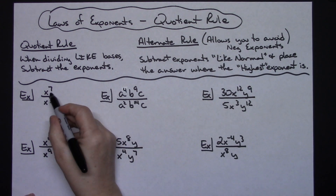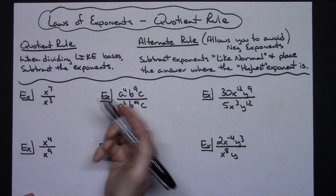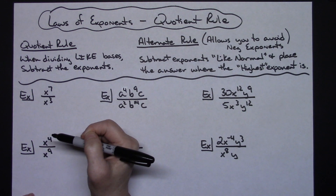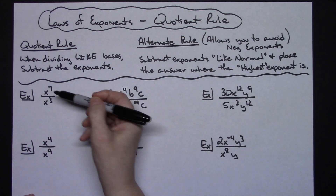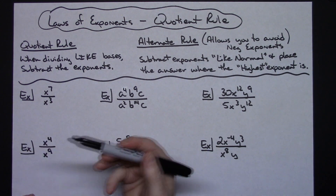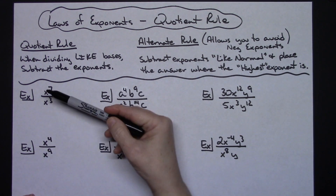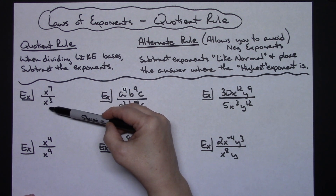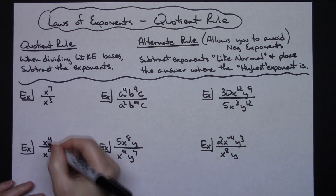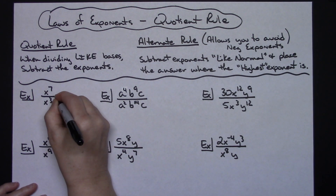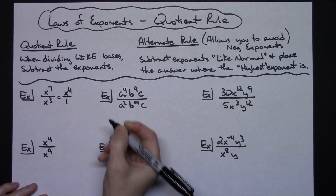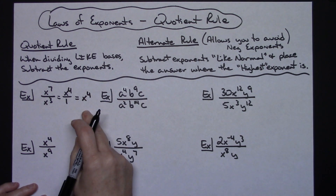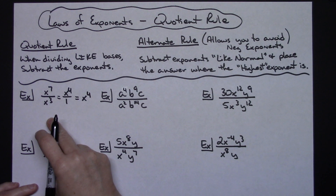Let's start with x to the seventh over x to the third — clearly like bases, so I apply the quotient rule. I subtract seven minus three to get four, giving me x to the fourth. Since x to the seventh is in the numerator, x to the fourth goes in the numerator, so the answer is just x to the fourth.